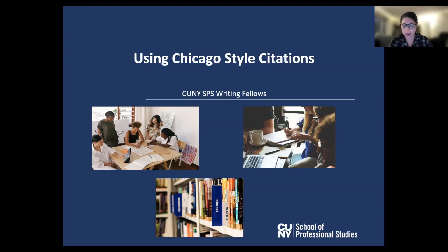We can help you at any stage of writing, whether you have an assignment and don't know how to approach it, or if you have a rough draft and want feedback, or if you're at the later stages and want someone to help you proofread or edit the paper, or help check your use of Chicago style. In order to get help, you will go to your Blackboard course site and click on the word tutoring in the navigation window. Then follow the instructions to make an appointment with the SPS Writing Fellows.